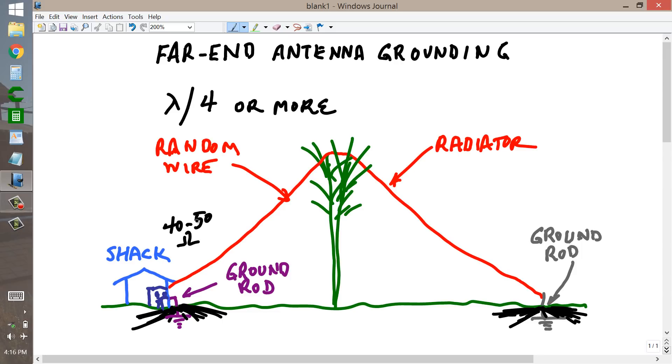One at the feed point end of the antenna and the other at the far end. And, that the antenna again be at least a quarter of a wavelength long.